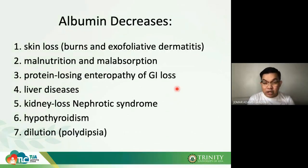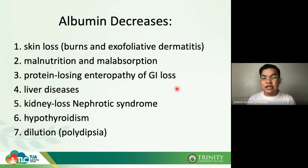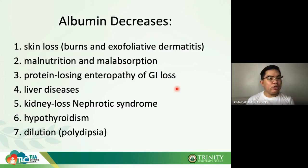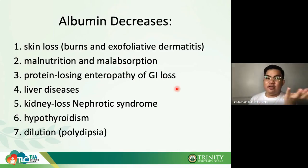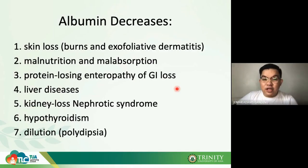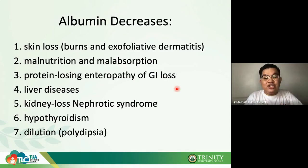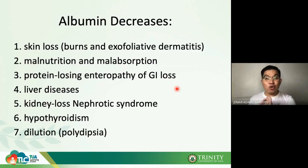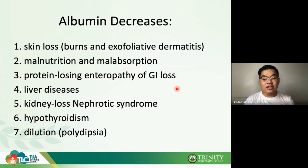Albumin is decreased in many situations: skin loss due to burns or exfoliative dermatitis, malnutrition and malabsorption, protein-losing enteropathy from gastrointestinal loss. Also in liver disease — since proteins are produced mainly by hepatocytes, any liver disease affects albumin synthesis.